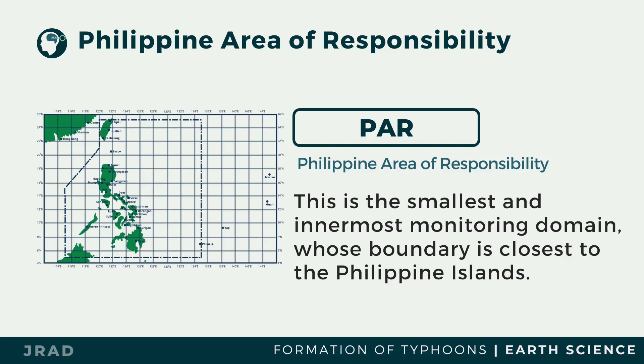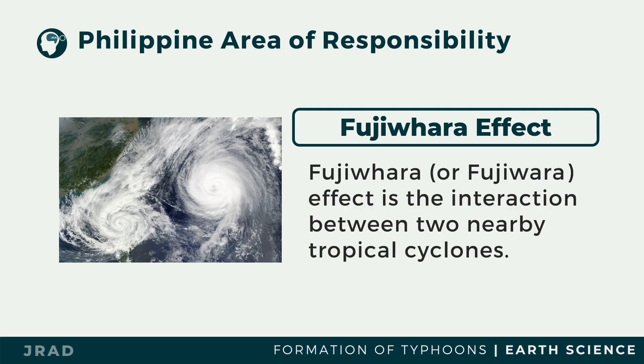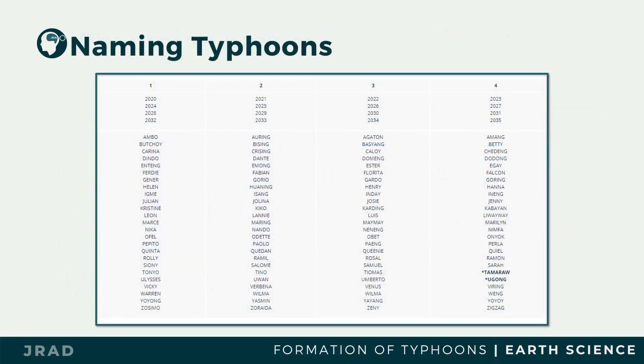Some typhoons that enter the country experience the Fujiwara effect, which strengthens their impact. The Fujiwara effect is the interaction between two nearby tropical cyclones, known as binary interaction, named after Japanese meteorologist Sakuhei Fujiwara. For instance, in 2009, Typhoon Pepeng had an interaction with Typhoon Kidan, which brought elevated intensity of winds and heavy rainfall. PAGASA releases local names for typhoons, which can be reused. However, a typhoon's name is retired when it caused at least 300 deaths or 1 billion pesos worth of agricultural and infrastructural damage.